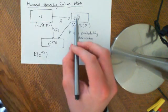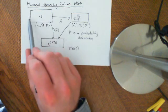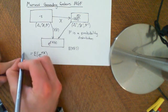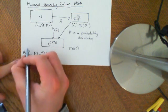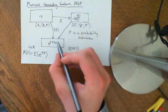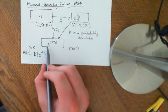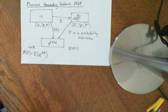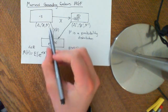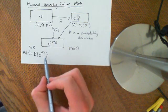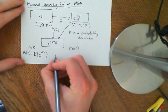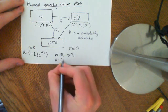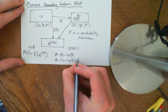The moment generating function is abbreviated M of little t. For each t in the real numbers, you define a mapping onto E to the power of T times X of S, which defines a new random variable — a function of T. You take the expected value of that random variable and get a number which is a function of T. So M is a function which maps the real line to the real line, mapping little t to the expected value of E to the T times X.